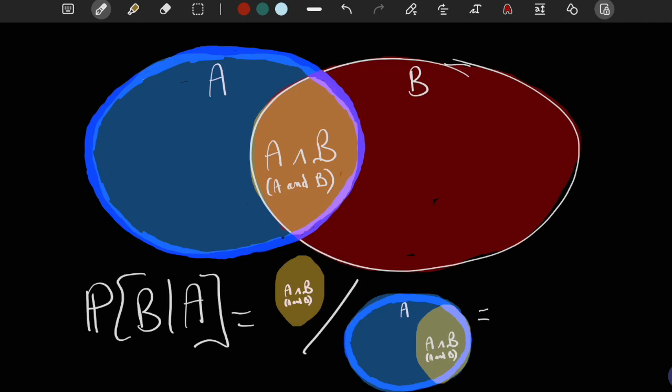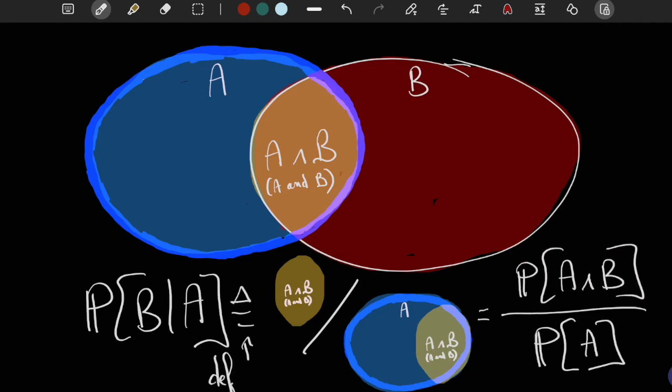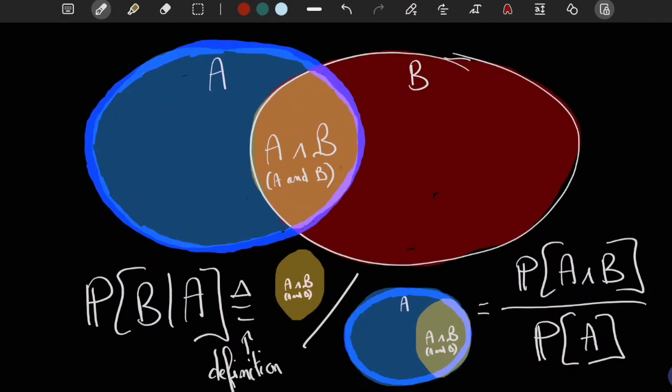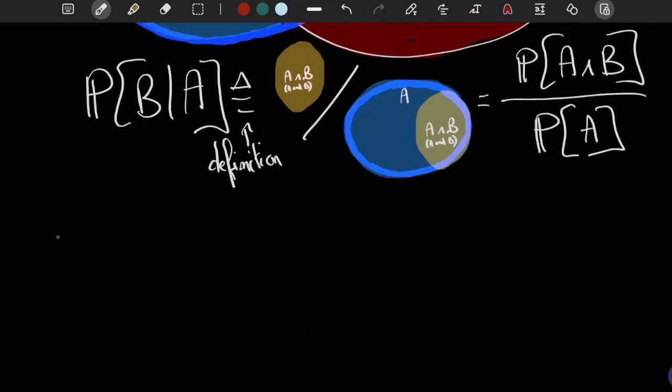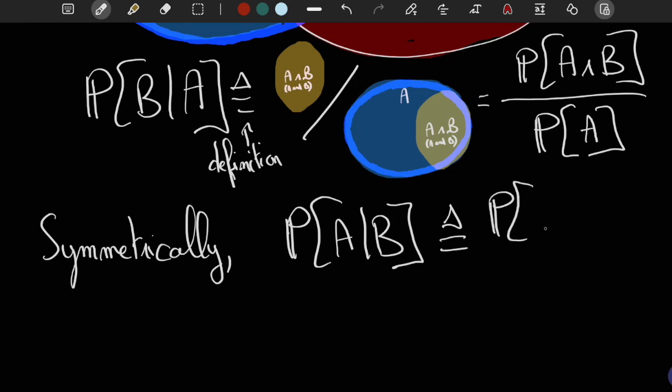Thus, the probability of B given A is equal to the probability of A and B divided by the probability of A. And note that this definition of conditional probabilities is not specific to the letters A and B. In particular, it remains true if we switch the letters A and B.